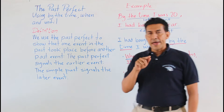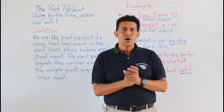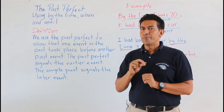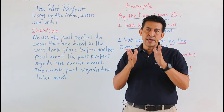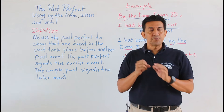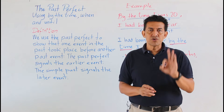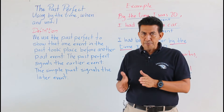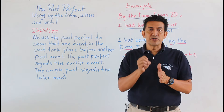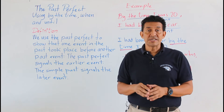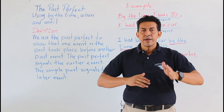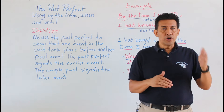In this class we have to know how to build sentences in the past perfect. The structure is: subject, the past tense of the verb 'have' — which is 'had' — then a past participle verb.